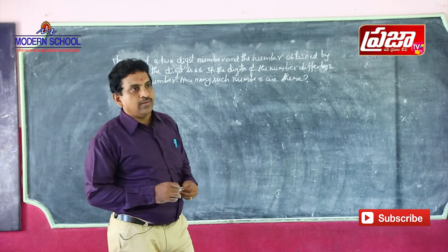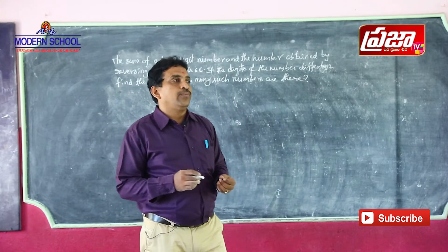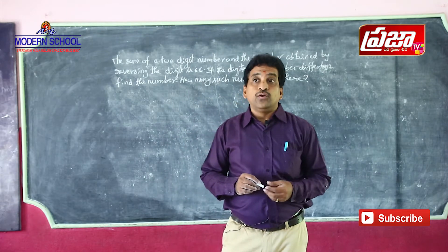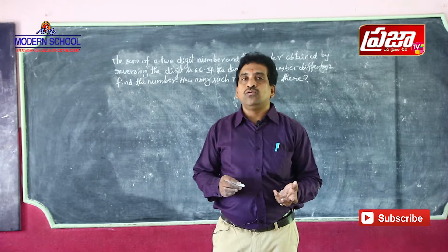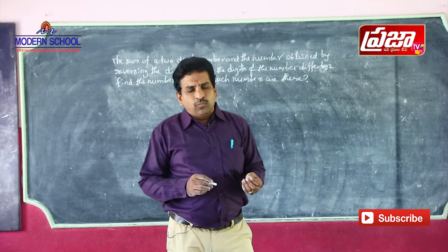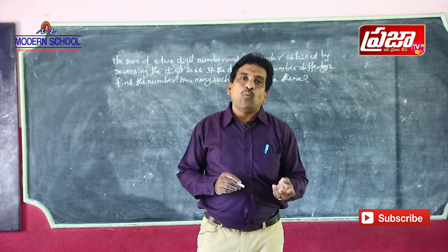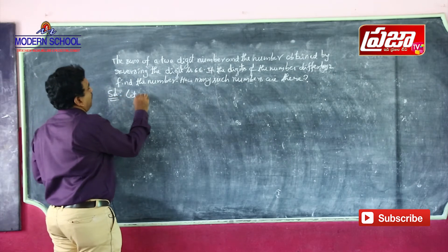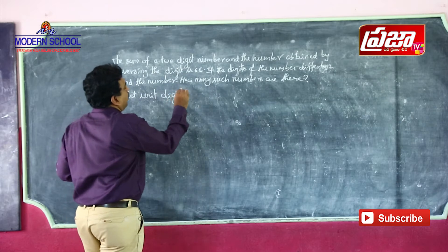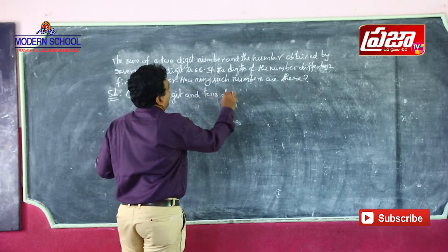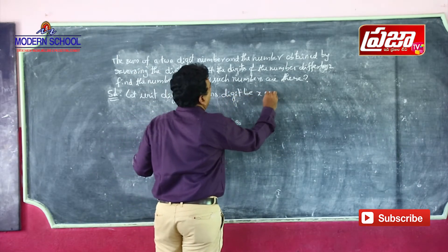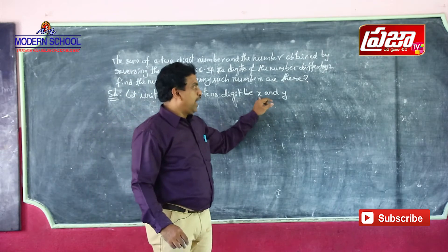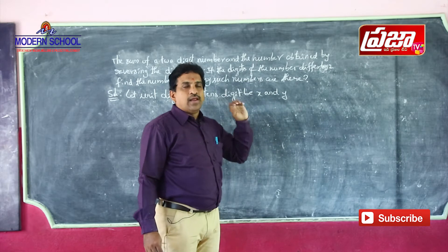First of all, you have taken a two-digit number, but we don't know the two-digit number. In a two-digit number, there are two digits — the unit digit and the 10th digit. Do you know the unit digit? Do you know the 10th digit? No. So we take both: let the unit digit be x and the 10th digit be y.